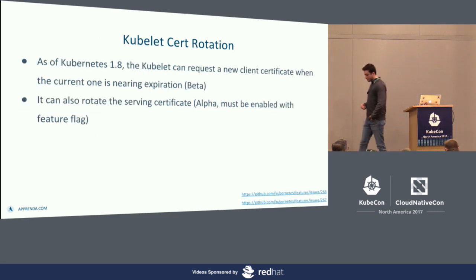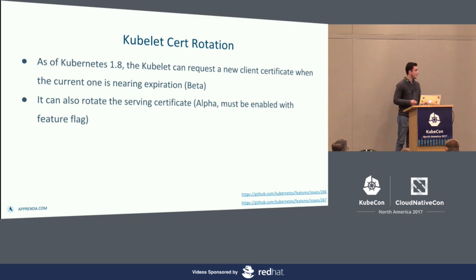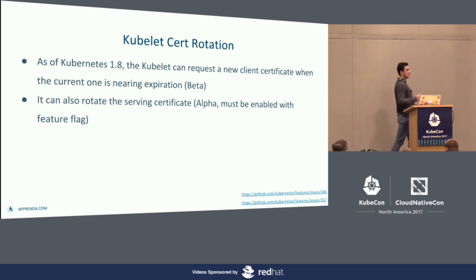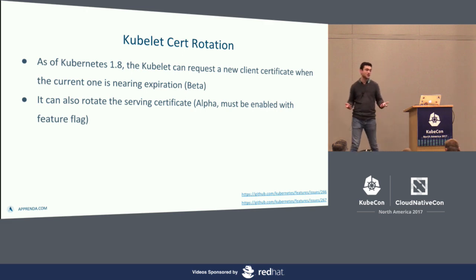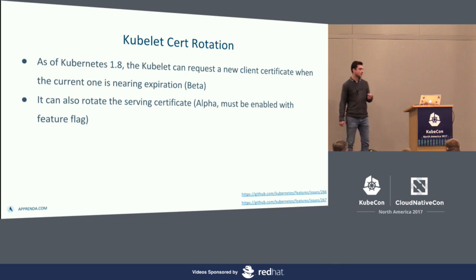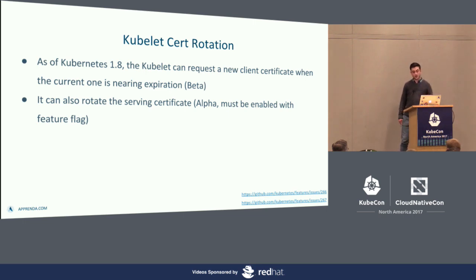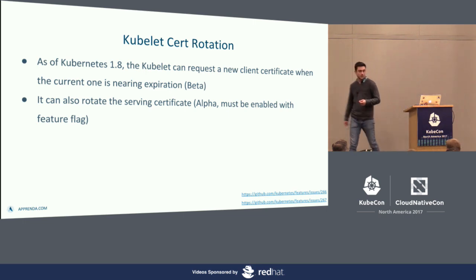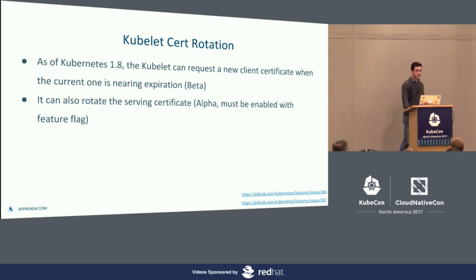That's how the kubelet bootstraps its own certificate. But what about rotation? You don't want to get paged at 2 o'clock in the morning when your cluster dies because all your kubelets fail to talk to the API server because the certificate expired. As of Kubernetes 1.8, kubelets can actually request a new client certificate when the one they're using is nearing its expiration date. Similarly, the kubelet can also rotate the serving certificate — that's actually in alpha right now with a couple of kinks to work out. If you want to follow the progress on that, the issues are linked on the slide.